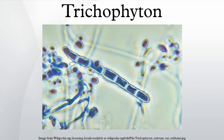Trichophyton concentricum causes Malabar itch, a skin infection consisting of an eruption of a number of concentric rings of overlapping scales forming papulosquamous patches. Trichophyton rubrum and Trichophyton interdigitale cause athlete's foot, toenail fungal infections, crotch itch, and ringworm.